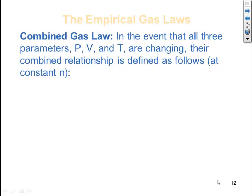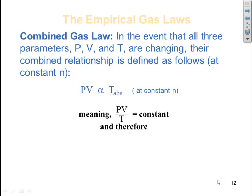Combined gas law. In the event that all three parameters — pressure, volume, and temperature — are changing, their combined relationship is defined as follows at constant number of moles: PV is proportional to temperature, the absolute temperature, at constant number of moles. This means PV over T is equal to some constant. Therefore, in the combined gas law, P1V1 over T1 is equal to P2V2 over T2.